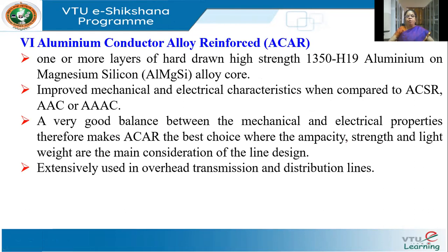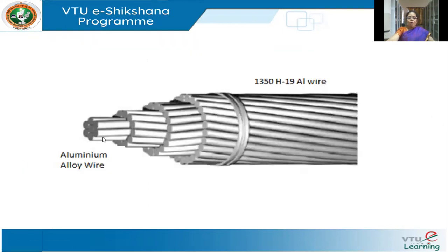Next we have ACAR — Aluminium Conductor Alloy Reinforced. It is similar to ACSR, only the reinforcement is not steel but a magnesium-silicon alloy. This has improved mechanical and electrical characteristics compared to ACSR, AAC, or AAAC. There is a very good balance between electrical and mechanical properties, with very good ampacity (current carrying capacity), good tensile strength, and lightweight. All these make it a very attractive material for overhead transmission lines at higher voltages. The centre is aluminium alloy reinforcement, with aluminium 1350H19 wire on the outside.